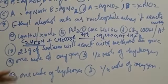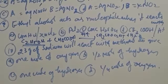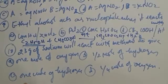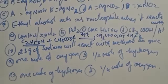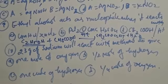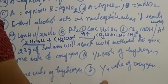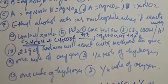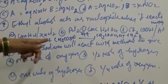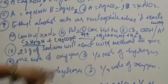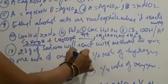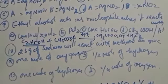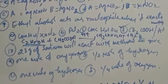23 grams of sodium will react with methanol to give: sodium metal replaces hydrogen from methyl alcohol, giving sodium methoxide and half a mole of hydrogen gas. So 23 grams of sodium reacts with methanol to give half a mole of hydrogen. Option D is the answer: CH₃COOH and H⁺.